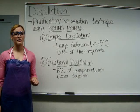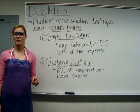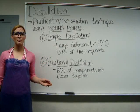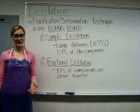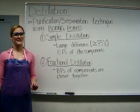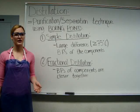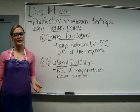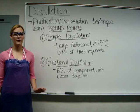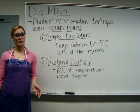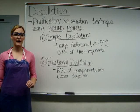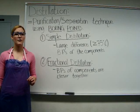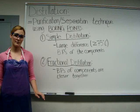Simple distillations work best for components that have boiling points that differ by at least 75 degrees, while fractional distillation can be used when boiling points of the components are closer together. Unlike simple distillation, fractional distillation uses a fractionating column, which can be packed with material to increase the surface area for heat exchange, thus increasing the number of theoretical plates. A theoretical plate is one cycle of vaporization and condensation — the more theoretical plates you have, the better the separation and purification of the compound.